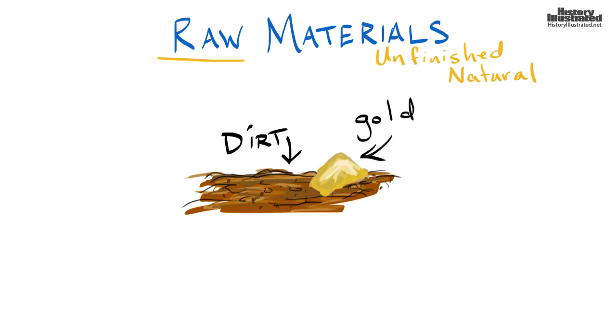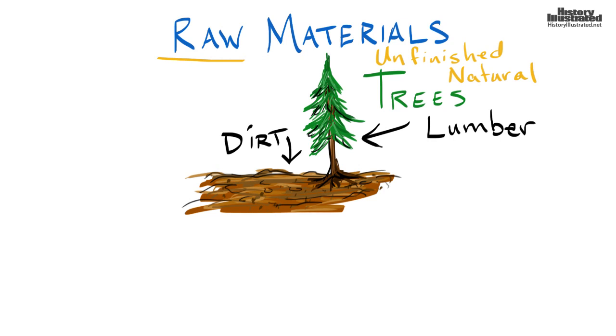Gold is another thing. We'll dig it out of the ground and we'll definitely turn that one into money. And then things like trees. We grow trees and we will turn them into lumber.